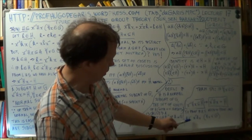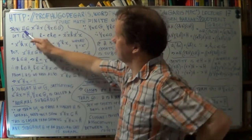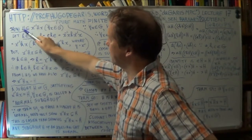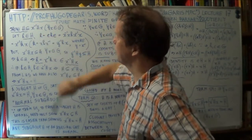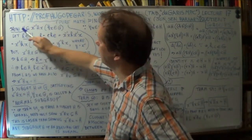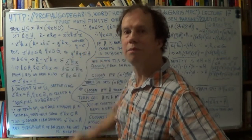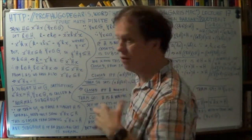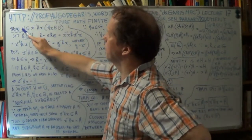So the strategy to prove Theorem 59 is we just have to prove H is a subset of X inverse HX. That's what we have to show. It's a subset-type relationship. To show that, you have to prove that any element belonging to H will belong to X inverse HX — that's the definition of a subset. So let little h be any member of your subgroup H.